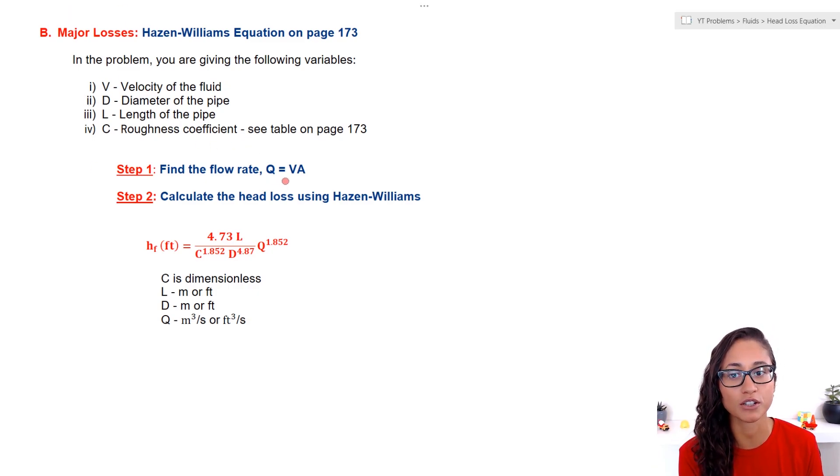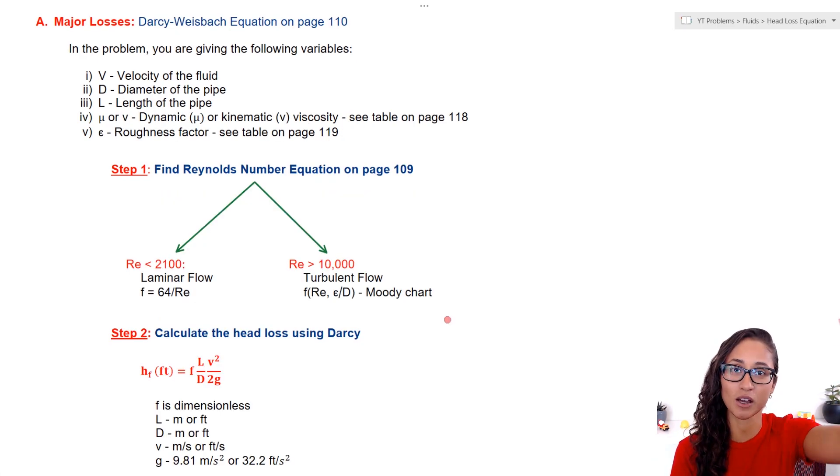Usually, in these type of problems, you will be given the velocity. To calculate the flow rate, all you gotta do is use the continuity equation: velocity times the area of the pipe. Once you get the roughness coefficient and the flow rate, then you can easily use this equation and calculate for the head loss. Again, all these units have to cancel to feet. I already did a video where we applied this equation. I will leave the link above in case you want to check it out.